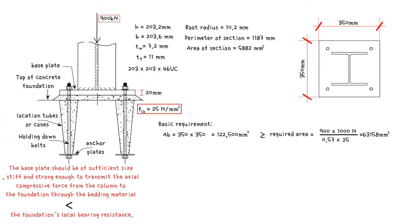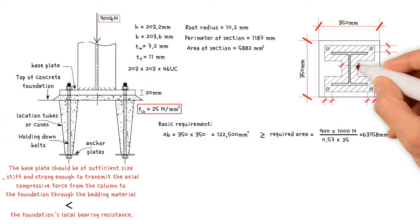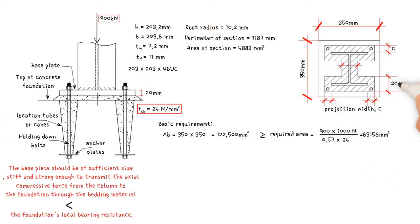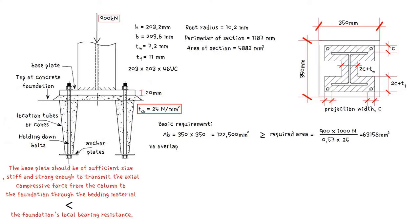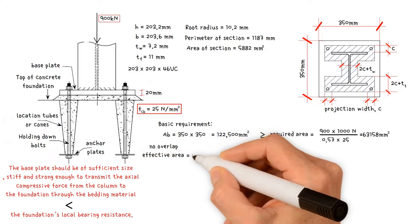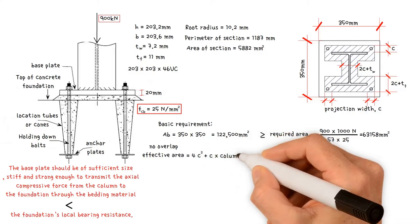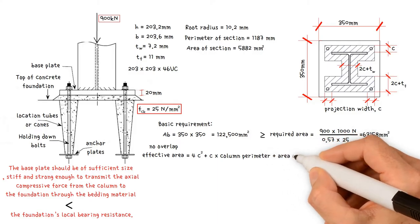Next, we need to determine the effective area in terms of the projection width C from the steel profile. We assume that there is no overlap. For UB or UC steel column, the effective area equals 4C squared plus C times column perimeter plus area of column.